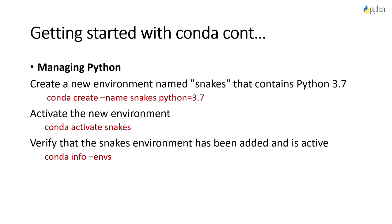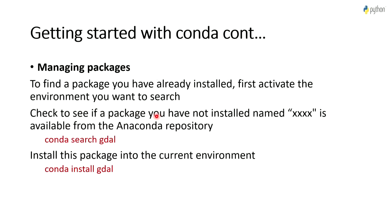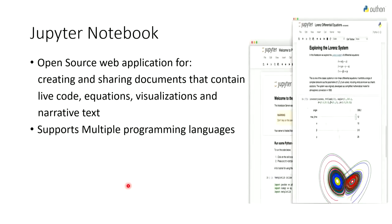If you want a specific version of Python, you can write: 'conda create --name <env_name> python=3.7' (or 2.7, 3.8, etc.). To search for packages, use 'conda search', and to install new libraries, use 'conda install'. This way you can manage packages in your environment.